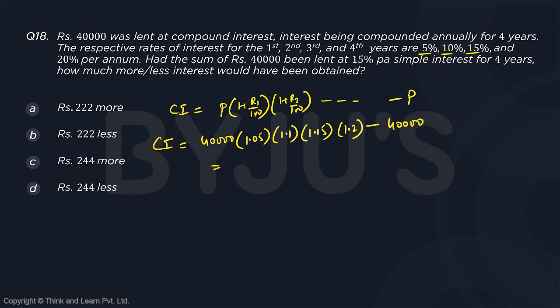You can use your onscreen calculator to get the answer. This will be 1.05 into 1.1 into 1.15 into 1.2, which gives 63,756 minus 40,000. So this will be 23,756, this is the compound interest.